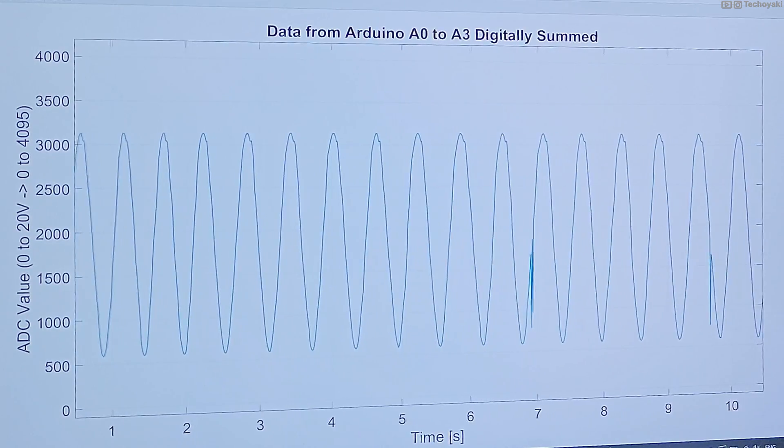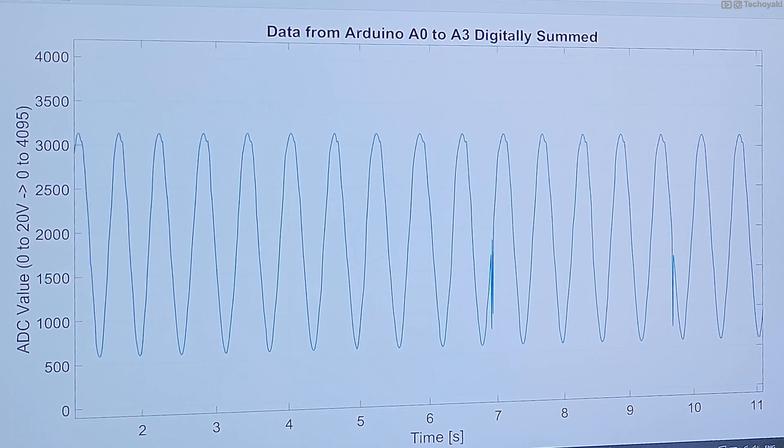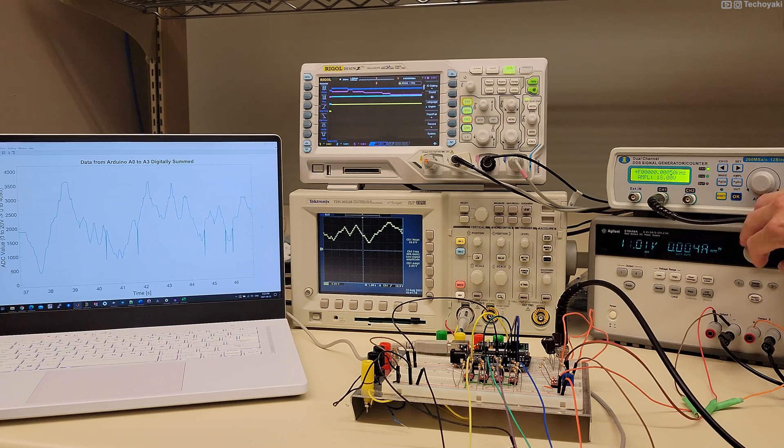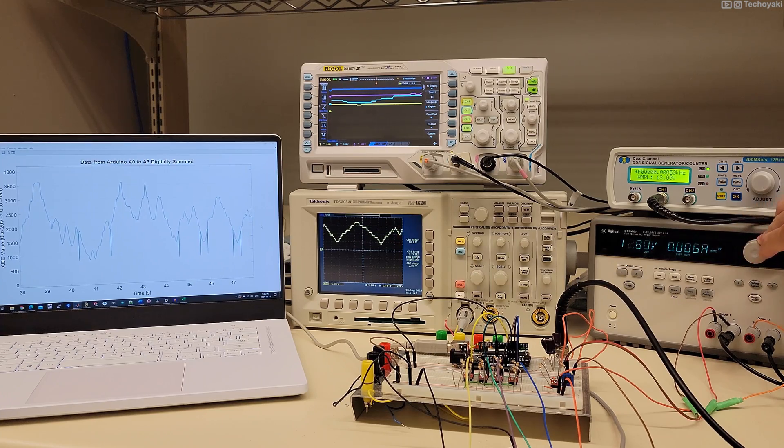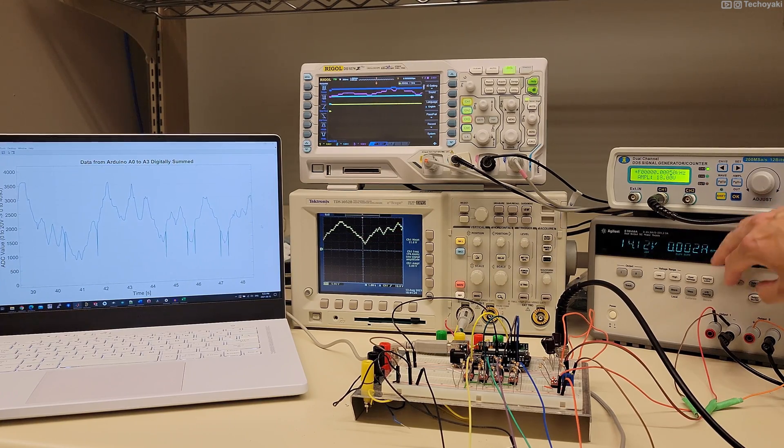The Arduino then sends the digitally summed ADC signal to our computer, which is running MATLAB plotting the data. Also, you can directly connect the 20 volt power supply instead of using the signal generator, and change the output voltage to create your own waveform.